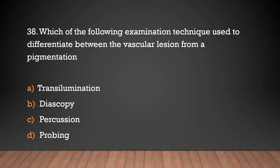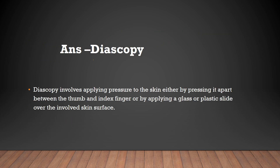Which examination technique is used to differentiate between a vascular lesion and pigmentation? The options are transillumination, diascopy, percussion, or probing. The answer is diascopy. Diascopy involves applying pressure to the skin, either by pressing it between the thumb and index finger or by applying a glass or plastic slide over the involved skin surface. This technique is used to differentiate vascular lesions from pigmentation.